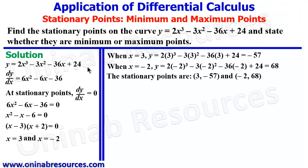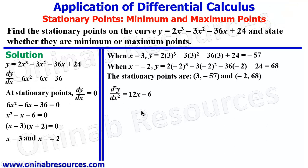We then go ahead to determine whether they are minimum or maximum points. To do that, we find the second derivative of the function. d²y/dx² is going to be 12x minus 6. The derivative of the minus 36 term is 0, so the second derivative is 12x minus 6.